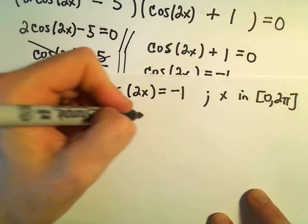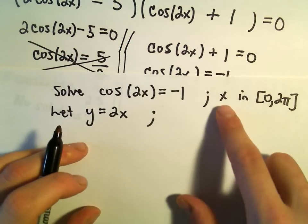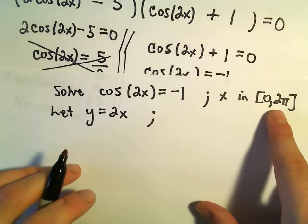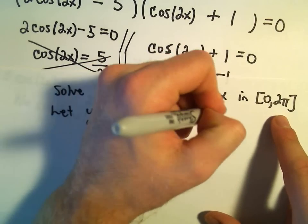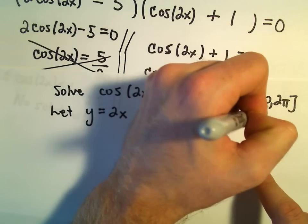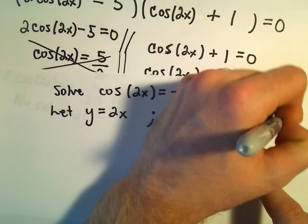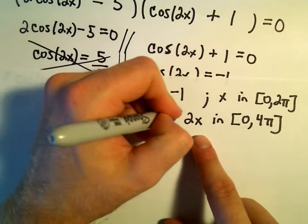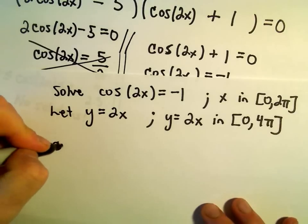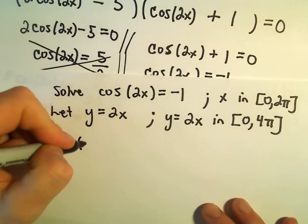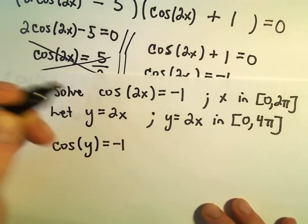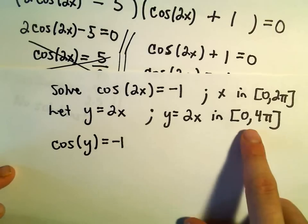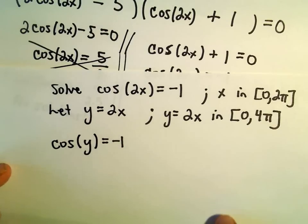Well, what I'm going to do is I'm simply going to let y equal 2x. Well, then if y equals 2x, since x was in 0 to 2 pi, 2x would be in the interval 0 to 4 pi. I'm just doubling. So equivalently, that means we're going to find all solutions to the trig equation cosine of y equals negative 1. But again, we want y to be in the interval 0 to 4 pi.